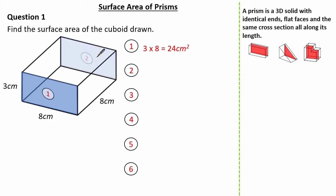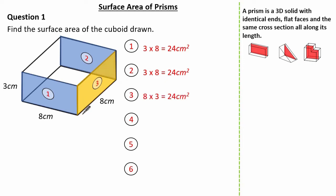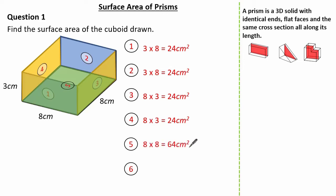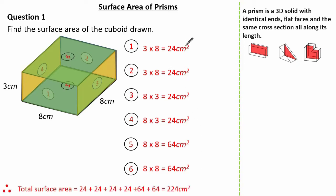Because we have an identical face on the back, face 2 is also 24 cm². Face 3 is an 8 by 3 rectangle, giving an area of 24 cm². Given that face 3 is identical to face 4, face 4 is also 24 cm². Face 5 is an 8 by 8 giving 64 cm², and face 6, identical to face 5, is also 64 cm².